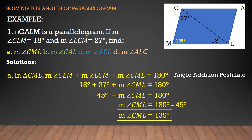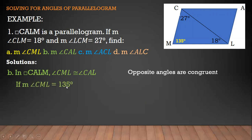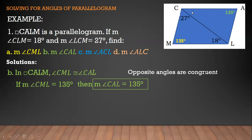That's how we find the measure of angle CML through the angle addition postulate — it is 135 degrees. Next, letter B: find the measure of angle CAL. In parallelogram CALM, angle CML is congruent to angle CAL because opposite angles of a parallelogram are congruent. Since the measure of angle CML is 135 degrees, the measure of angle CAL is also 135 degrees.